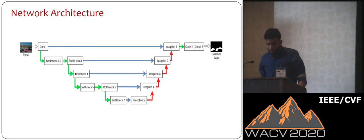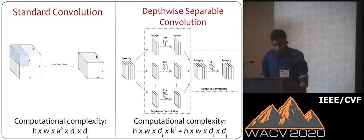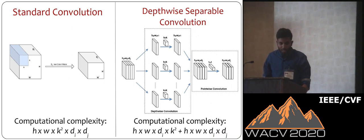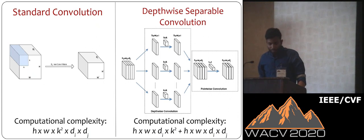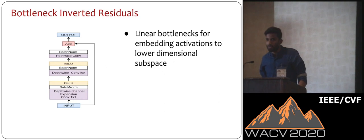This is our network architecture, which is similar to the U-Net. The bottleneck blocks from the encoder are pretrained on ImageNet, and the inception blocks form the decoder part of the network. We use a depth-wise separable convolution, which consists of a depth-wise convolution where a single filter is applied to each input channel, followed by a 1x1 convolution that linearly combines the output. Using depth-wise separable convolutions in place of standard convolutions gives us a computational advantage of 1/(D_J + 1/K²).